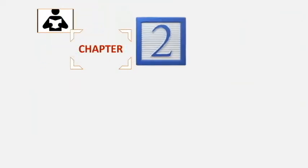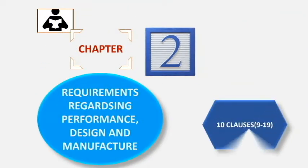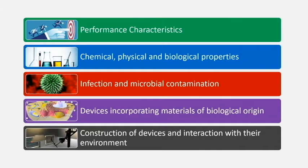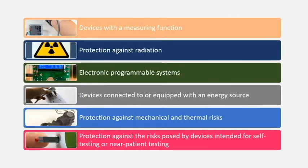Chapter 2 covers requirements regarding performance and has ten clauses — a new criteria added in the GSPR. Under Chapter 2 we look into: performance characteristics, chemical, physical and biological properties, infection and microbial contamination, devices incorporating materials of biological origin, construction of devices and interaction with their environment, devices with a measuring function, protection against radiation, electronic programmable systems, devices connected to or equipped with an energy source, protection against mechanical and thermal risk, and risks posed by devices intended for self-testing or near-patient testing.